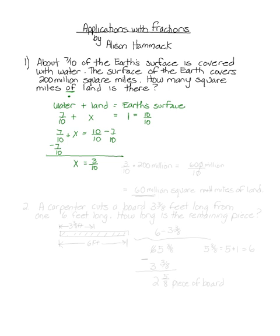We're going to take our three-tenths and multiply it by the total surface area of the Earth, which is two hundred million. We'll get six hundred million over ten. We can simplify by removing a zero from both the numerator and denominator, and we're left with our final answer of sixty million square miles of land.